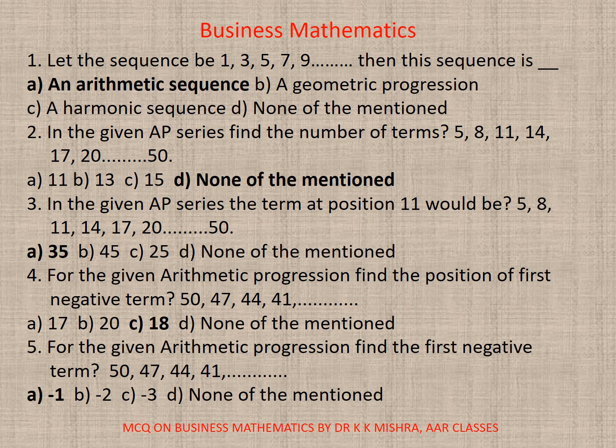Question 5. For the given arithmetic progression, find the first negative term: 50, 47, 44, etc. Calculate, here correct option is A, that is minus 1.